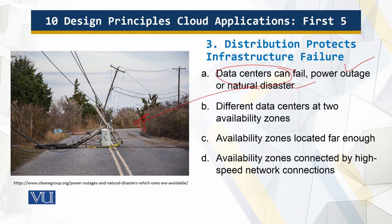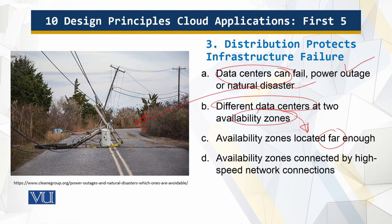In that case, you use redundancy at the data center level. Rather than running your application on multiple instances within a single data center, you run those instances in different data centers across two availability zones. Those zones are located far enough apart to be resistant to natural disasters, so even if one is knocked offline by a storm or earthquake, another remains operating. Availability zones are connected by high-speed network to ensure application performance doesn't suffer when spanning multiple zones.